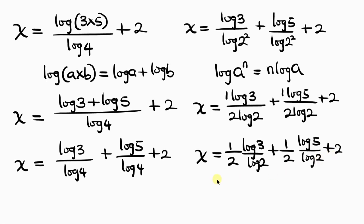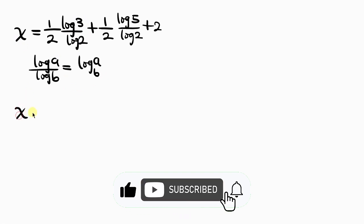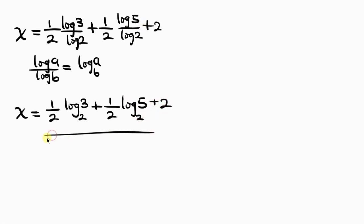Our next step is to apply the change of base property of logarithm, which says log a over log b = log base b of a. Applying this, x = (1/2)·log₂3 + (1/2)·log₂5 + 2, and this is our final answer.